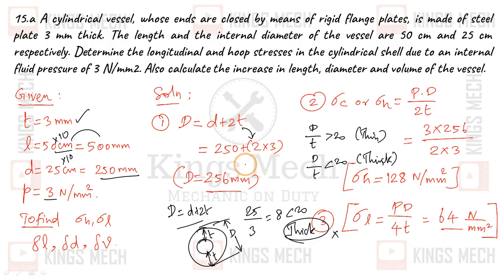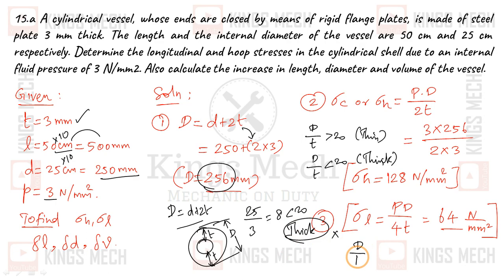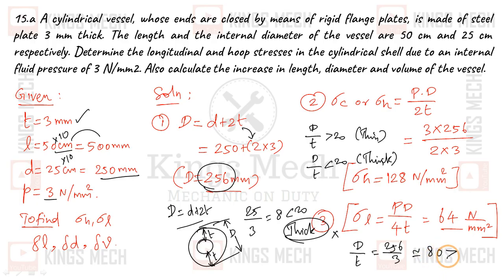So D = 250 + 2×3 = 256 mm. Now applying the criterion: D/t = 256 divided by 3, which is more than 80 — well above 20. Since D/t is greater than 20, this is confirmed as a thin cylinder, not a thick cylinder.